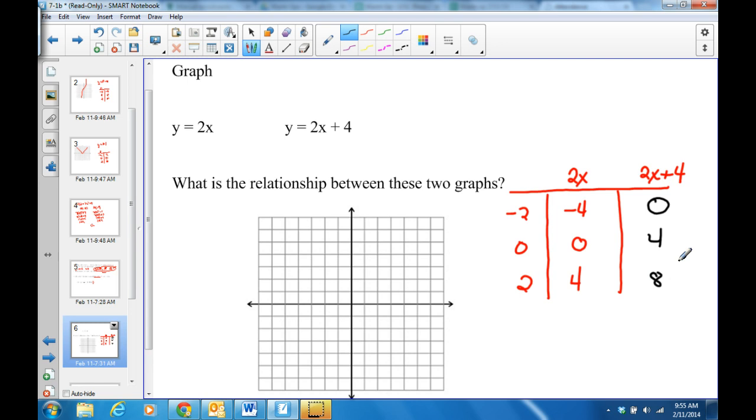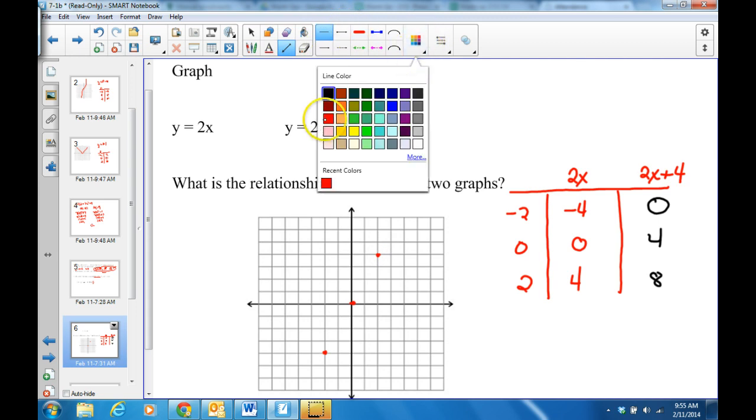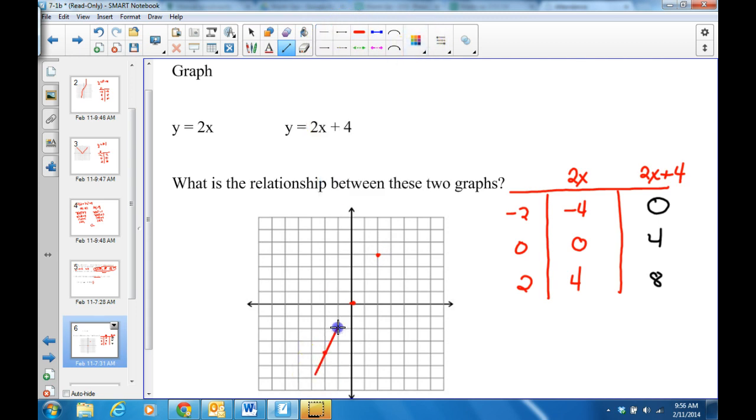So let's go through and actually graph these at this point and let's compare. So the first one, I have negative 2, negative 4. Negative 2, negative 4 is right here for my first one. 0, 0 and 2, positive 4. If I draw a line through that, I have this.